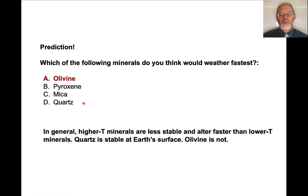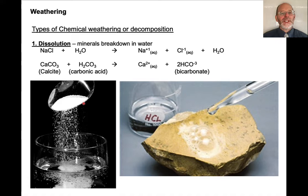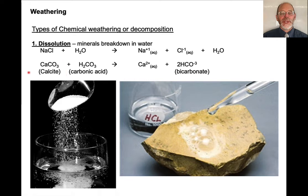There are several different types of chemical weathering or decomposition. Dissolution is one of the simplest: if we take salt and put it in water, it dissolves. Salt deposits, when exposed near the surface, can simply dissolve — sodium and chlorine enter into solution and end up in the ocean. We can also take calcite and react it with carbonic acid, a common acid in solution, and it will dissolve to form calcium as an aqueous ion plus bicarbonate as an aqueous anionic complex.